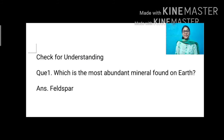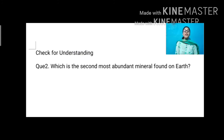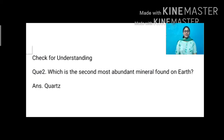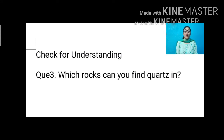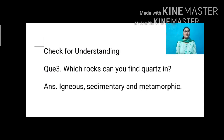Second question: which is the second most abundant mineral found on earth? The answer is quartz. Quartz is the second most abundant mineral found on earth. Third question: which rock can you find quartz in? Quartz is found in igneous, sedimentary, and metamorphic rocks.